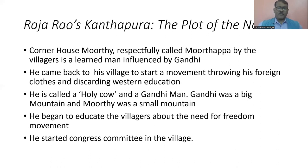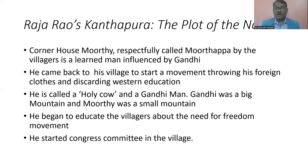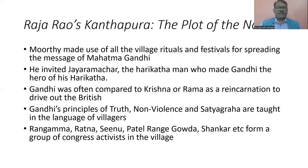Murthy is called a holy cow — a mini Gandhi in his village. Many people used to say Gandhi is a big mountain and Murthy is a small mountain. Murthy freely mixed with Pariyas, the untouchables, which was not liked by Bhatta and Swami. Murthy was excommunicated from his community because he was mixing freely with the untouchables of his village. His mother Narasamma was very sad because of Murthy's association with the Pariyas, and one day she died in distress. Raja Rao's Kanthapura also deals with various rituals and festivals in South Indian villages.